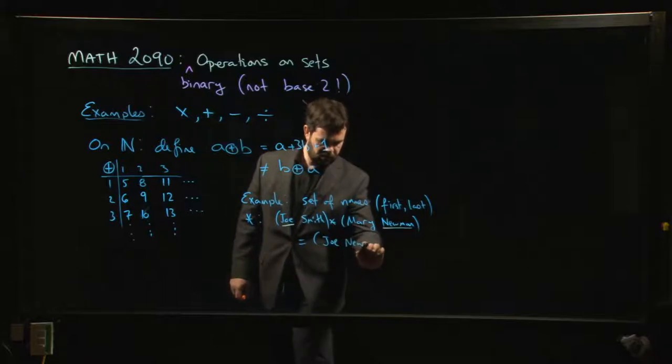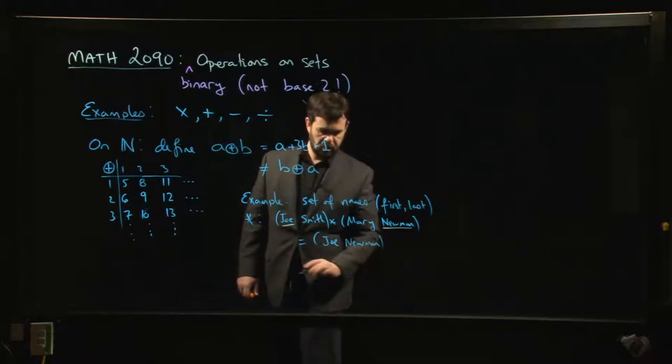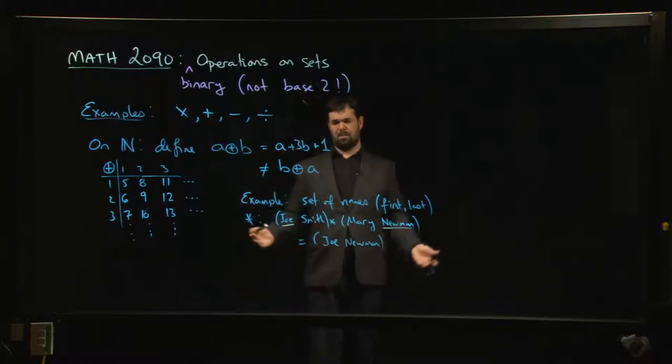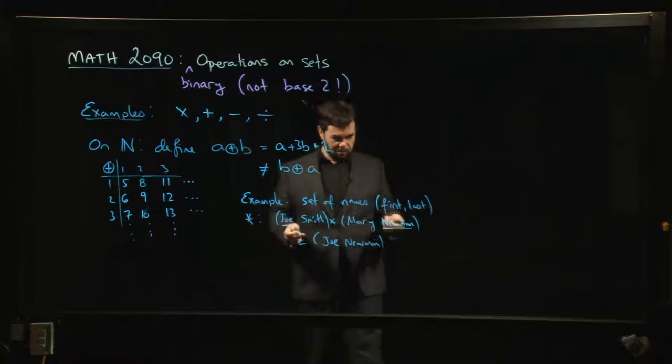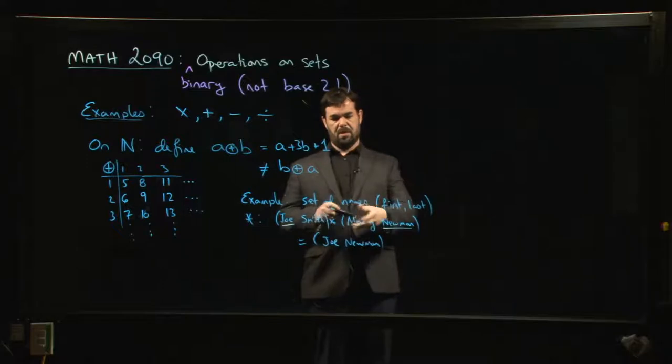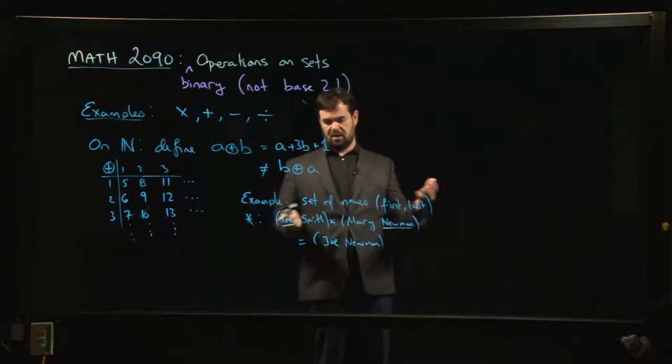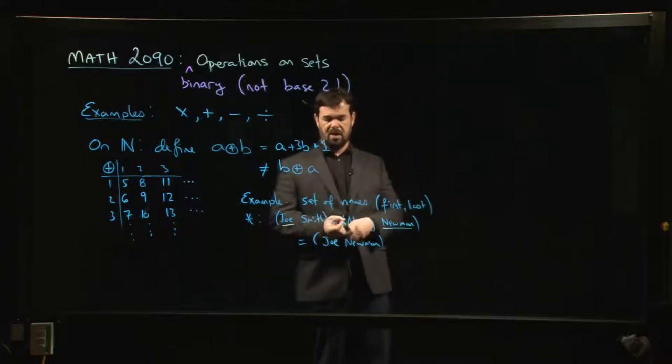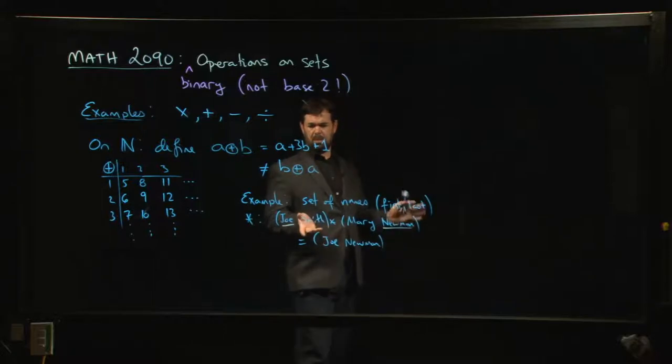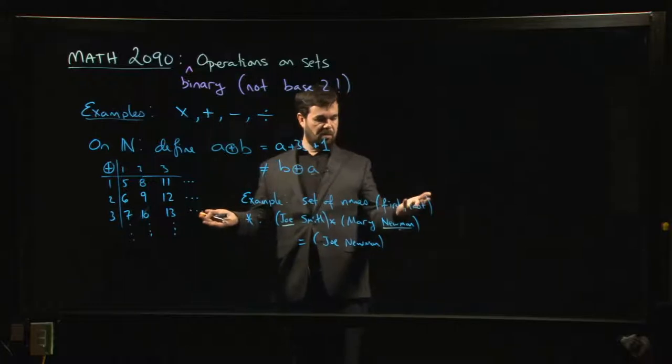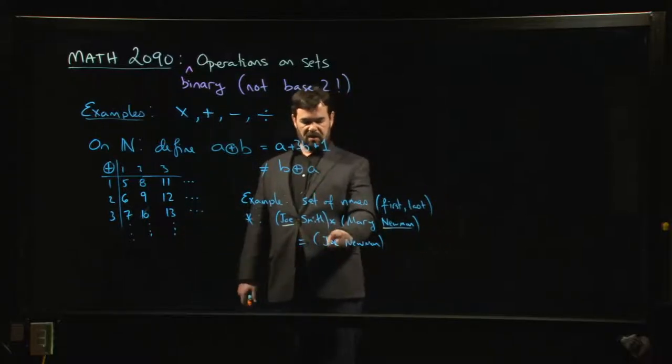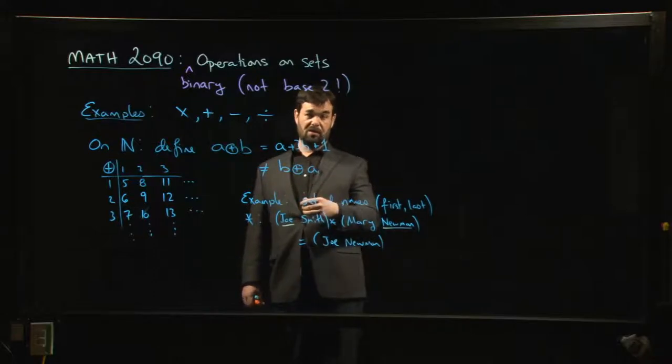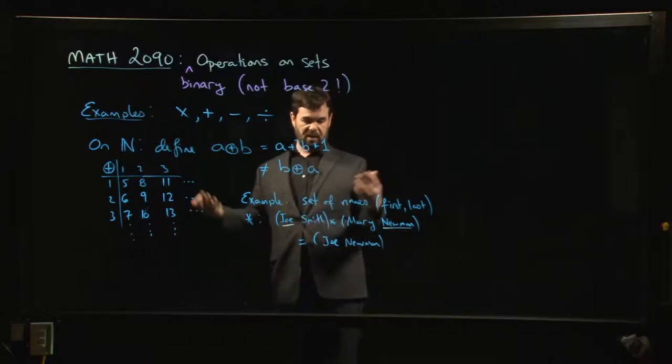So I guess it's going to be Joe Newman. All right. So there's another—well, it's a binary operation, right, on a set of names. I don't know how big that set has to be to include everything, right? If you went with—let's say, you know, maybe we'll play this as a game in class. We'll see what happens if we took our set to be just the names of people in the class.